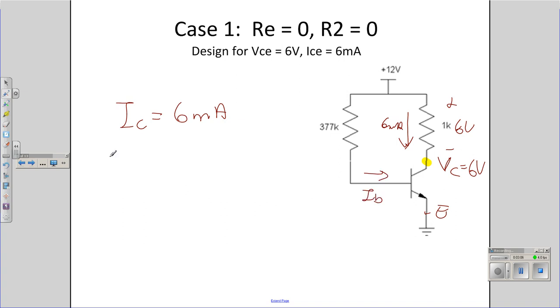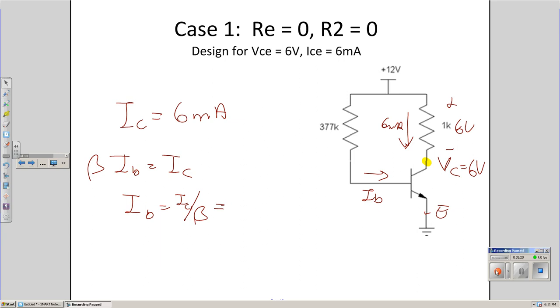The base current, then, beta times IB is IC. That lets you solve for IB. IB is IC over beta. If beta is 200, you get 30 microamps.